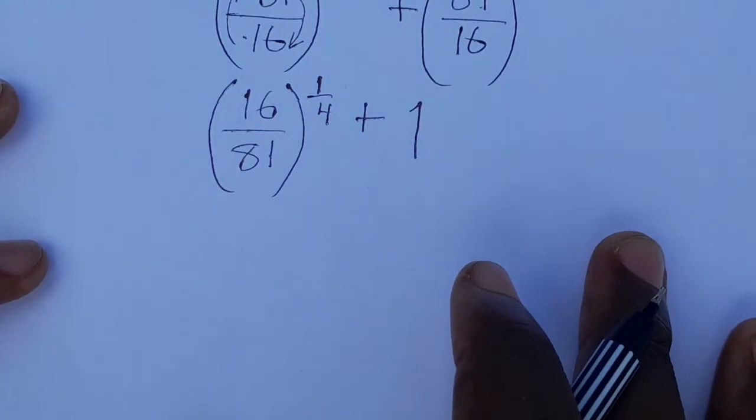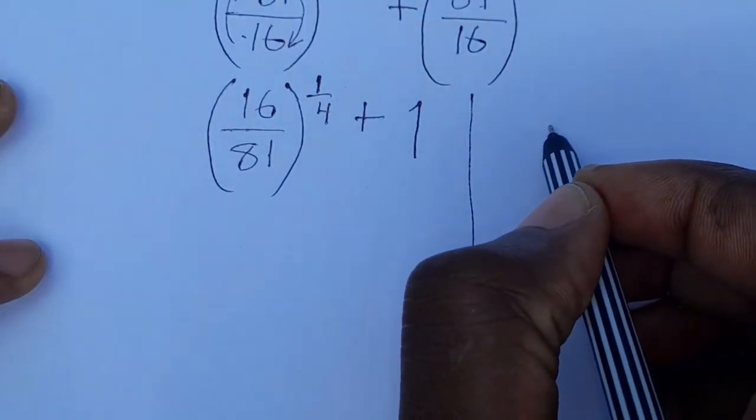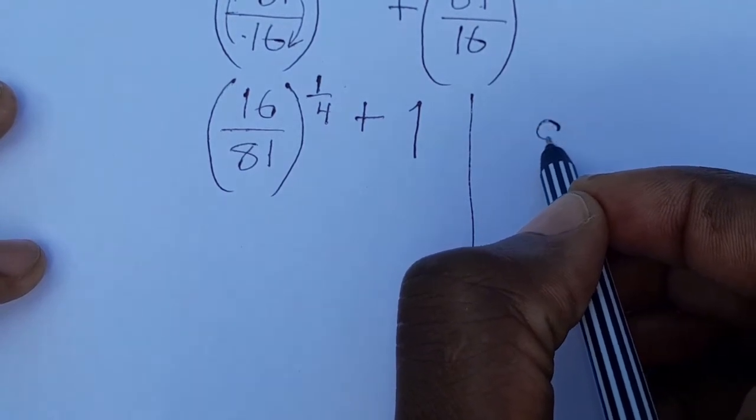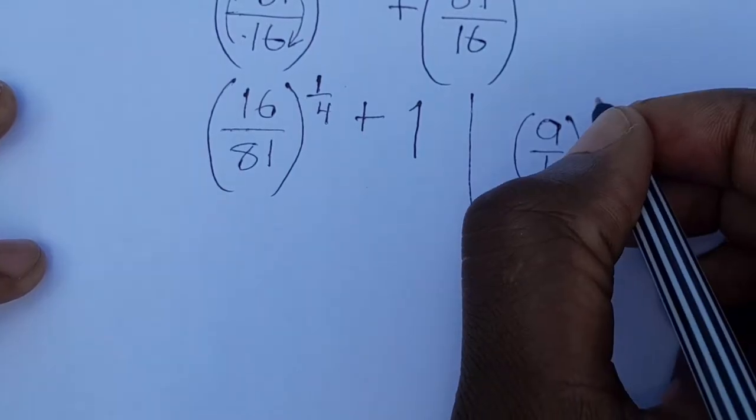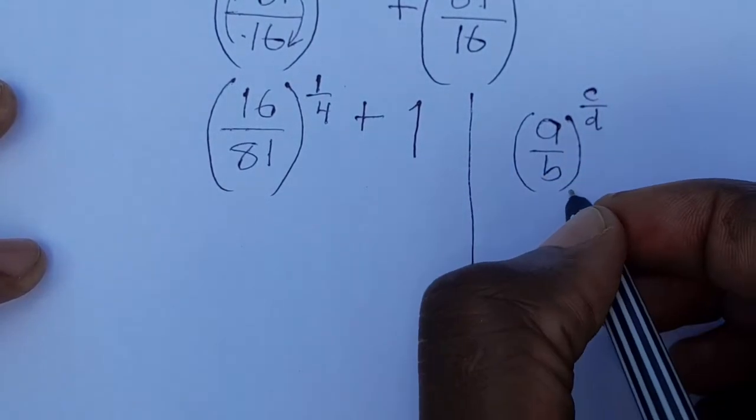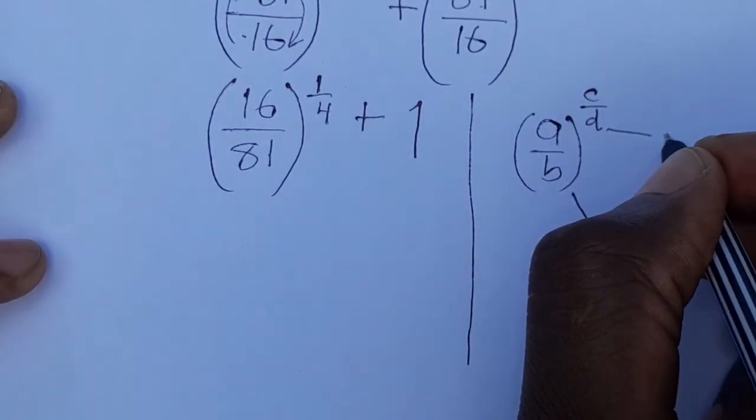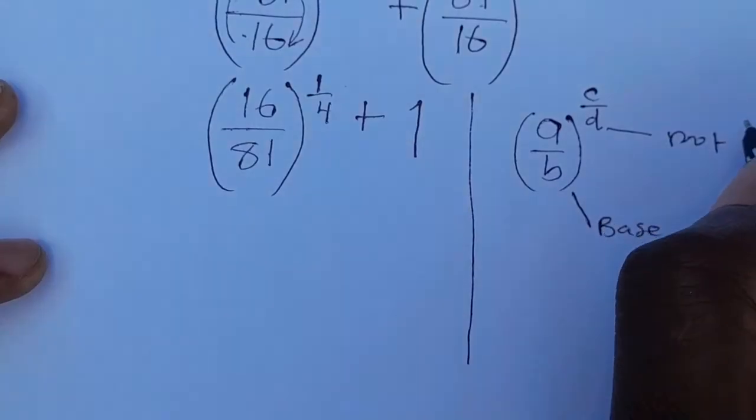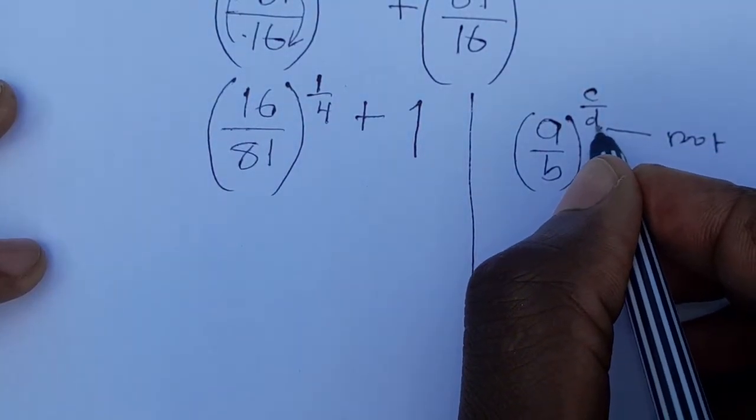Then to work out this, for example if you have a number, a fraction a over b that has been raised to the power c over d, this number here is called the base.